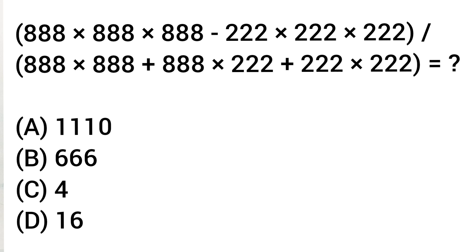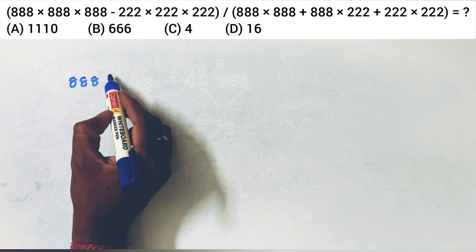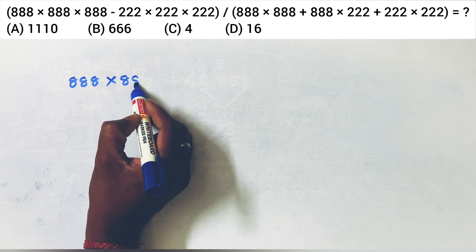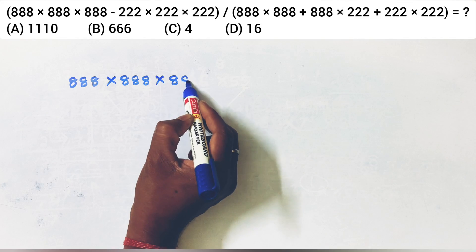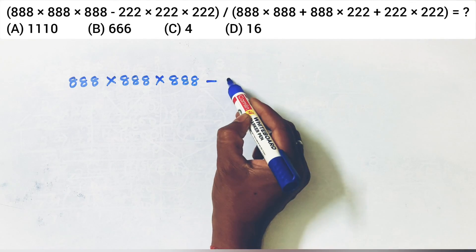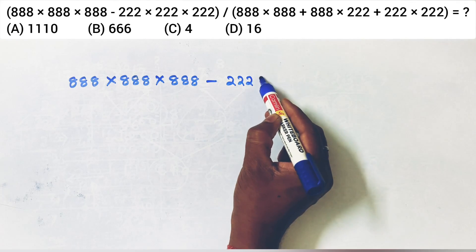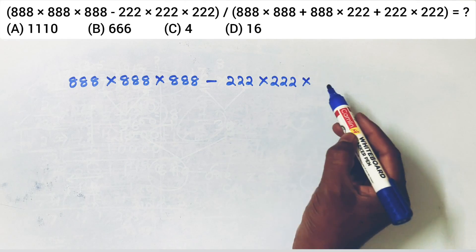888 × 888 × 888 minus 222 × 222 × 222, divided by 888 × 888 plus 888 × 222 plus 222 × 222. Then we will add my number for FH 188. 1088 × 888 × 888 × 222.